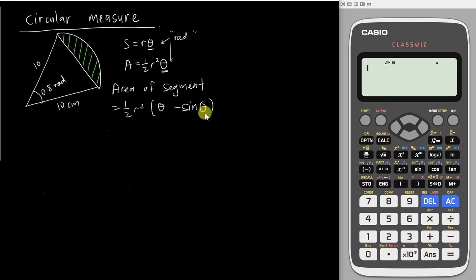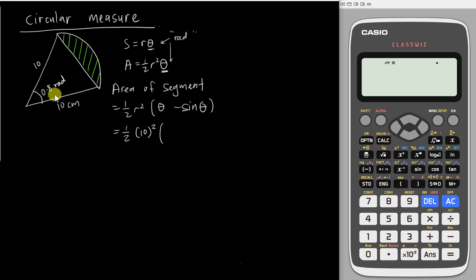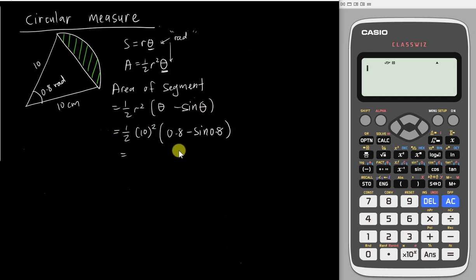So I'm going to show you both methods. If I straight away want to use this formula, it's very easy. I just do: ½ × r² × (θ − sinθ), where r = 10 and θ = 0.8. So it's 0.8 − sin(0.8). I key everything into my calculator and get the final answer for the area of shaded region.